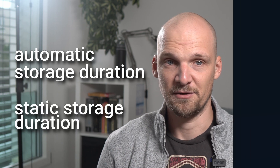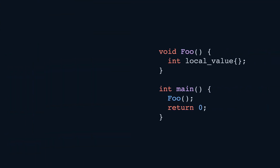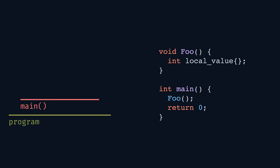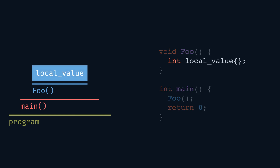There are a number of storage durations that any variable can have. At this point we care about only two: the automatic storage duration and the static storage duration. To explain the difference, we start with a simple main function that calls another function, foo, that has a single local variable in it. We can draw the execution time of the program — main and foo functions as lines. The local value variable lives as long as the execution of the foo function. Its memory is allocated at the start of the function and freed at the end of the scope. We say that a variable like local value has automatic storage duration.